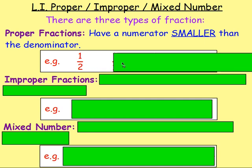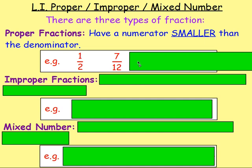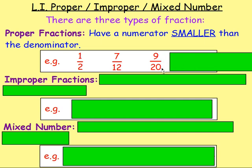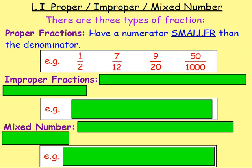Seven twelfths is another proper fraction — seven is smaller than twelve. Nine twentieths: nine is smaller than twenty. And fifty over one thousand: fifty is smaller than one thousand. So for each of these, the numerator is smaller than the denominator — they're all proper fractions.